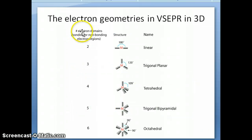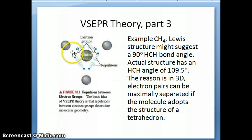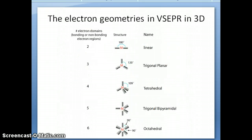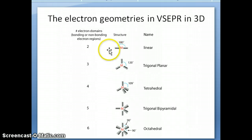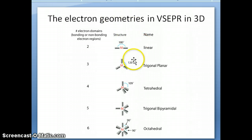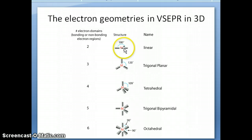Now, before we use VSEPR, we need to know what electron geometries VSEPR predicts. The idea of VSEPR is that the electron pairs around a particular atom will try to repel each other as much as they can in three dimensions, and that results in certain electron geometries. The central atom is indicated by the letter M, and the electron pairs are indicated by lines. If the central atom has two electron pairs, the furthest they can get away from each other is 180 degrees, giving us a linear structure.